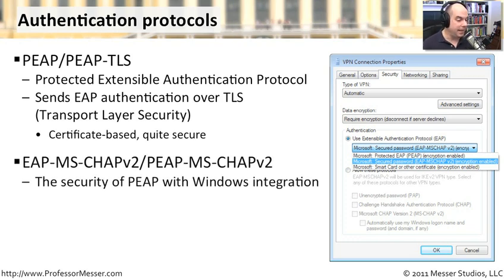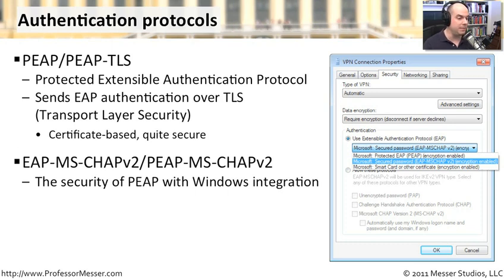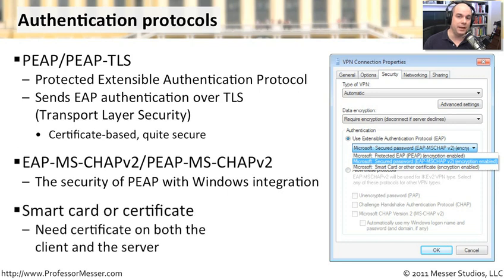Microsoft has added EAP to MS-CHAP V2 so you can do the same CHAP integration with your Windows login, but now add the security of PEAP on top of that. In many cases, end users don't have to do anything — they connect over EAP MS-CHAP V2 without entering any additional usernames or passwords. If you want it to be even more secure, you can enable certificate-based authentication, which ensures only workstations with the certificate can connect back over the VPN.